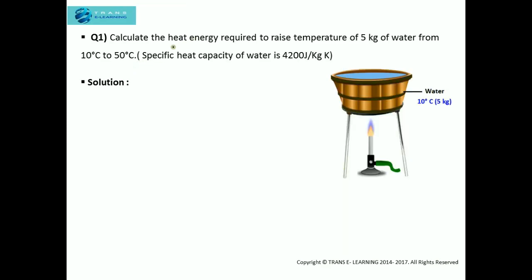The first question: Calculate the heat energy required to raise the temperature of 5 kg of water from 10 degree Celsius to 50 degree Celsius. The specific heat capacity of water is given as 4200 joules per kg per kelvin. Here you can see in this image that a container contains 5 kg of water, and initially the temperature of this water is 10 degree Celsius. We need to find how much heat energy we need to supply to raise this temperature to 50 degree Celsius.